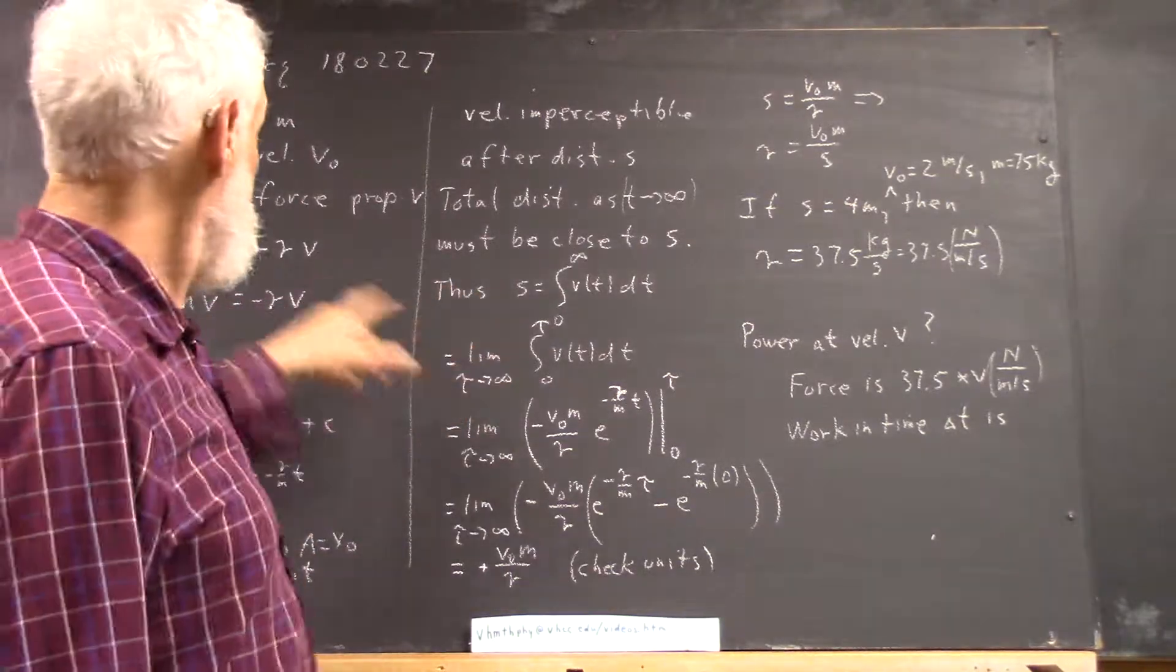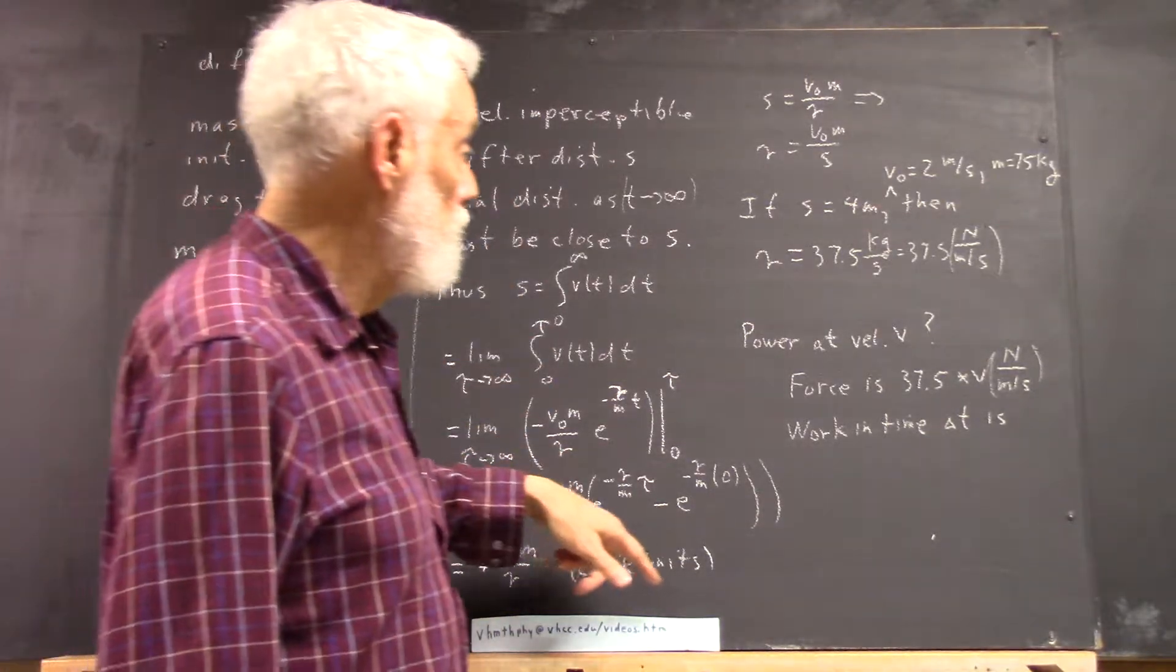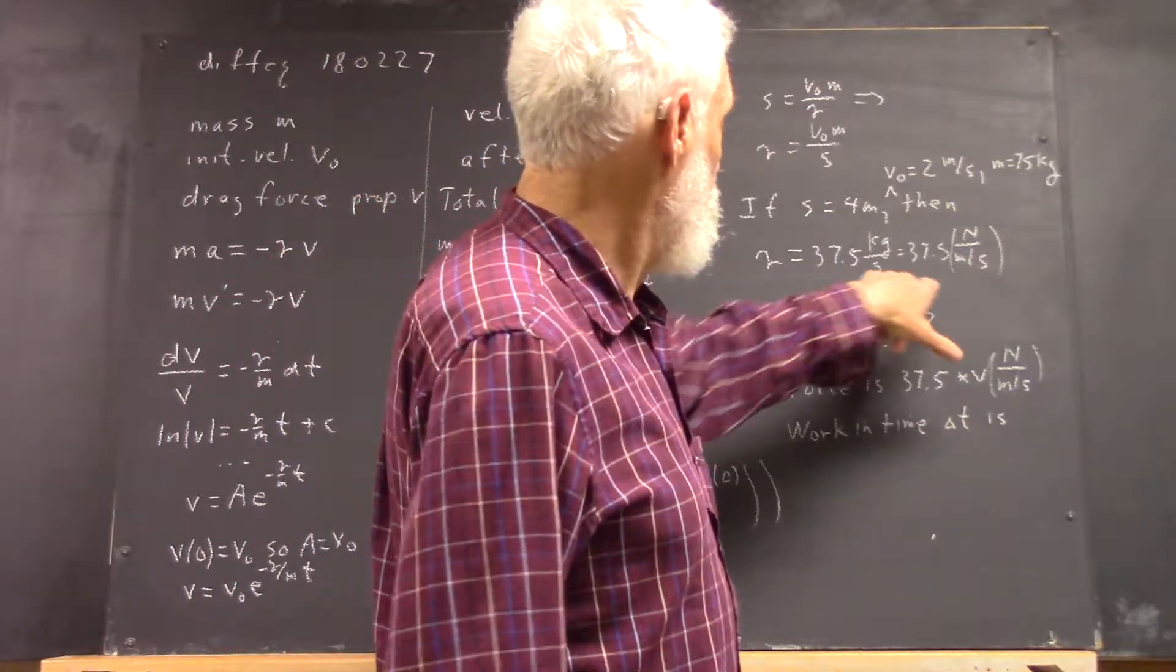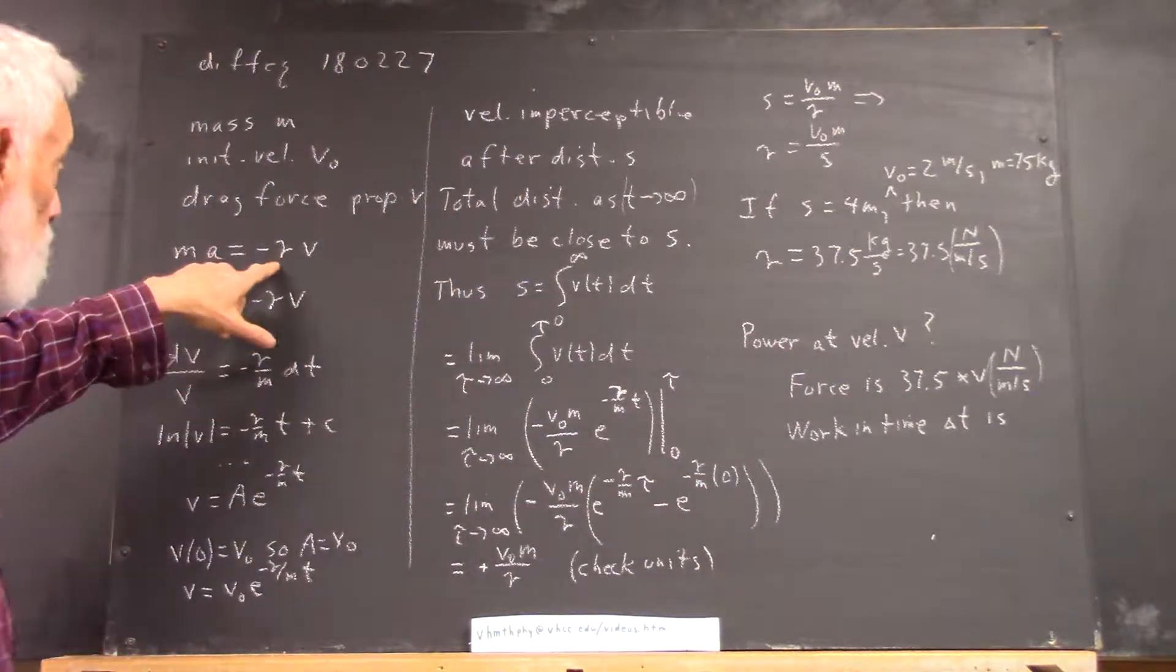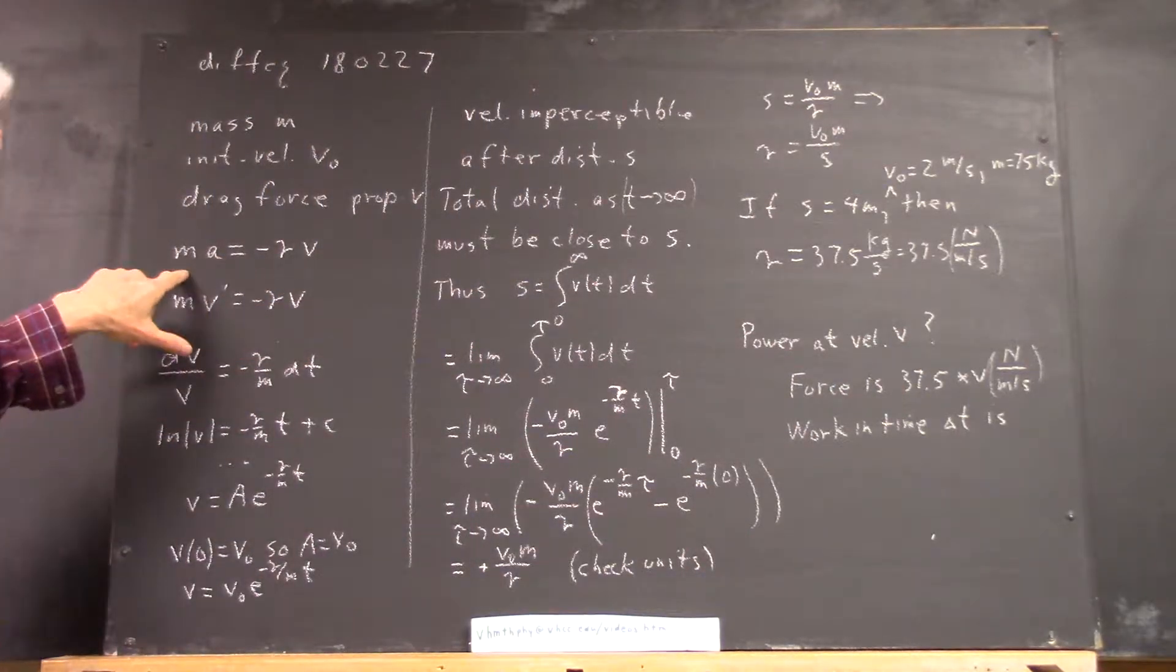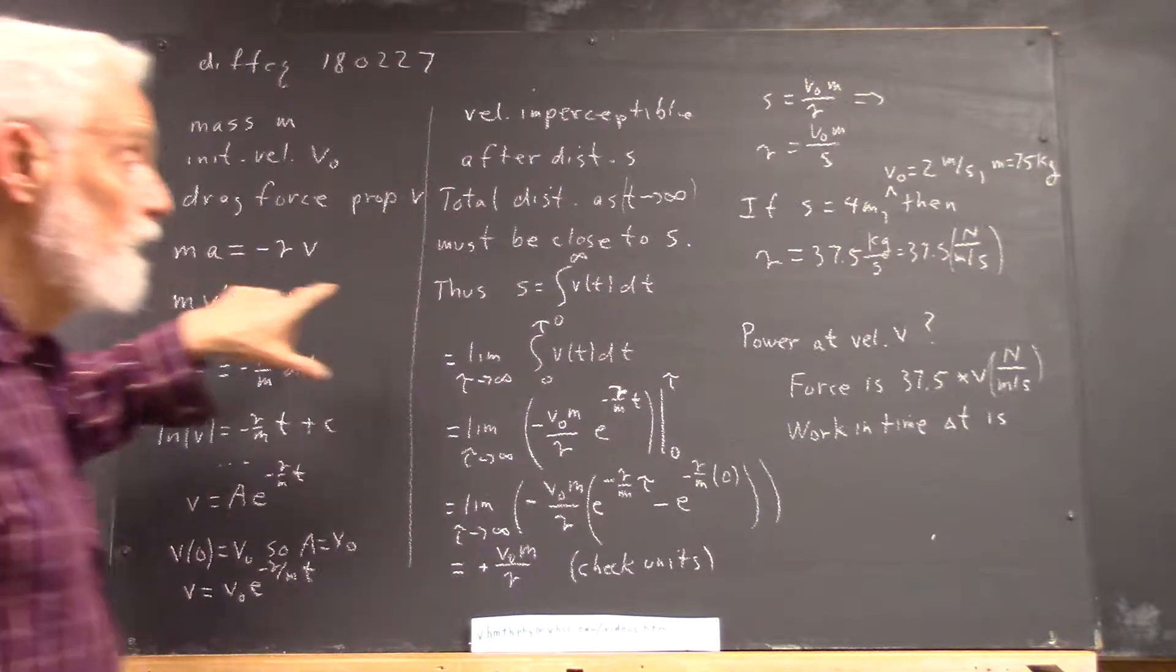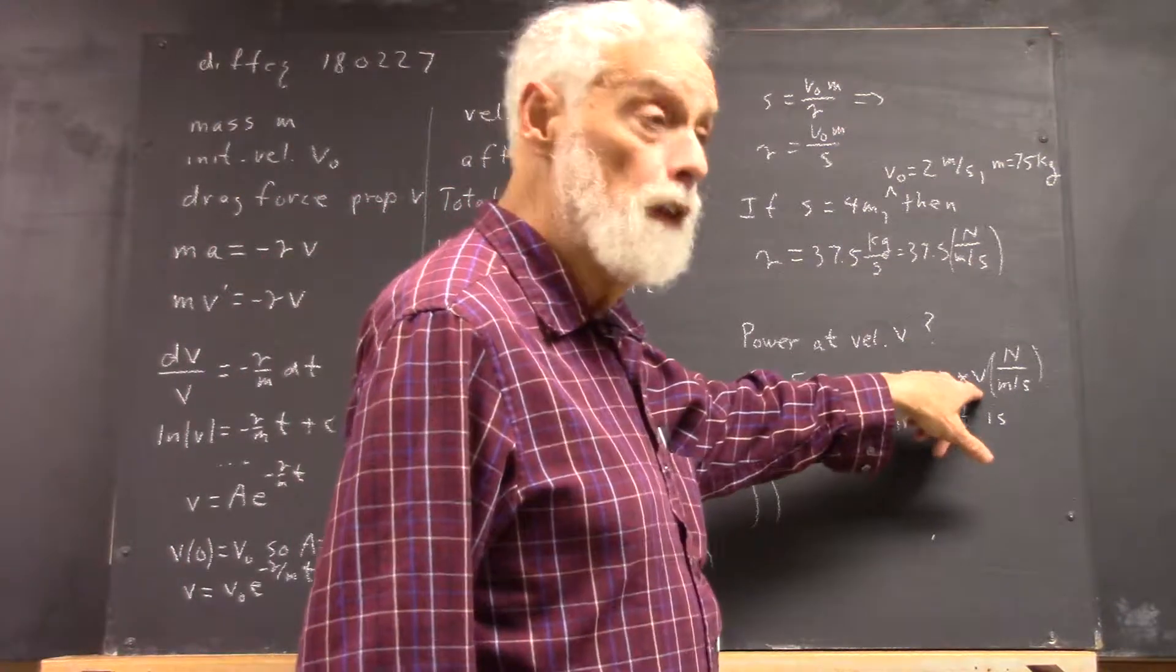So using the information that we have, we figured out that the drag coefficient must be this. Well, the drag coefficient is what I multiply by V to get the drag force, right? So now I can find the drag force for any velocity V.